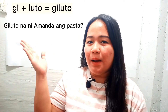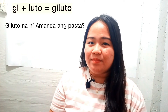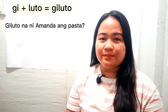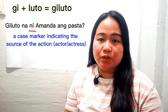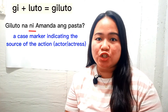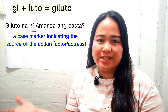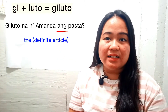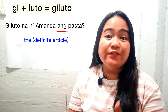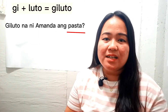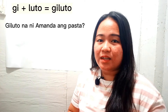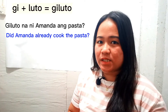For example: Giluto na ni Amanda ang pasta? Giluto means cooked. Na means already. Ni is a case marker indicating the source of the action — it means an actor or actress. Amanda is a name of a woman. Ang means 'the' in English — it's the definite article. Pasta means pasta. So, giluto na ni Amanda ang pasta? In English: Did Amanda already cook the pasta?